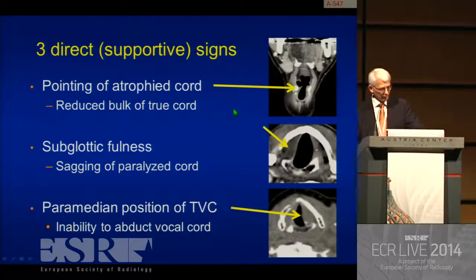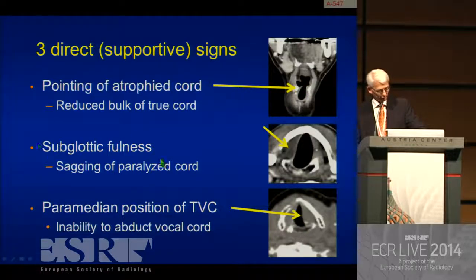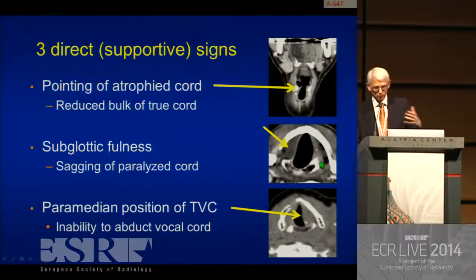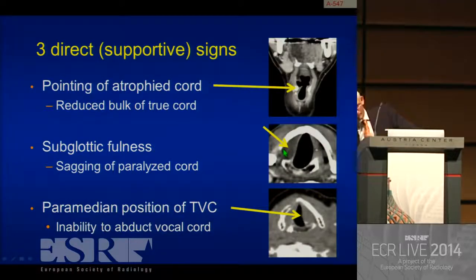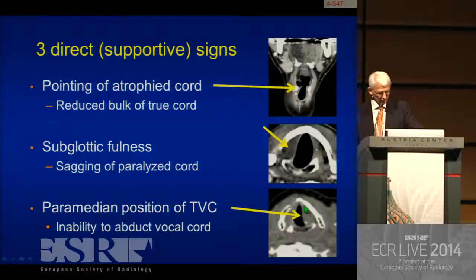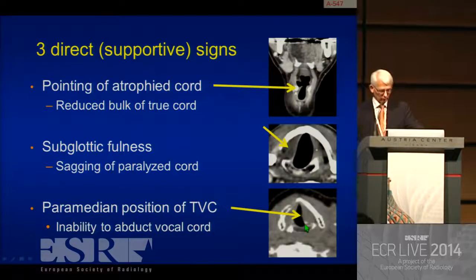The supportive signs: a reduced bulk of the true cord — so-called pointing, which is normally more round. You will also see subglottic fullness — this is the undersurface of the true vocal cord, caudal to the cricoarytenoid joint — with some more tissue on the affected side because of sagging of the paralyzed cord. And you will see the paramedian position of the cord because of the inability to abduct.